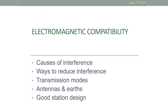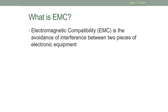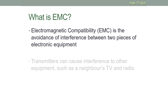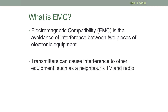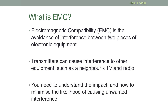Let's look at what EMC is. Electromagnetic Compatibility, or EMC, is the avoidance of interference between two pieces of electronic equipment. Transmitters can cause interference to other equipment, such as your neighbour's TV or radio. As a radio amateur, you need to understand the impact and how to minimise the likelihood of causing unwanted interference.